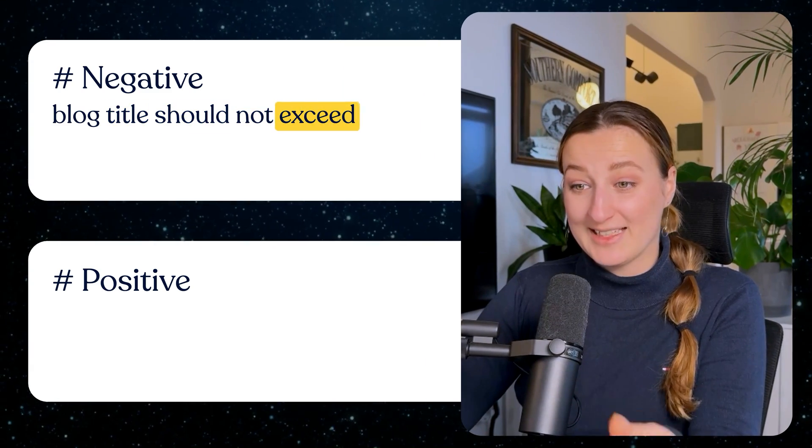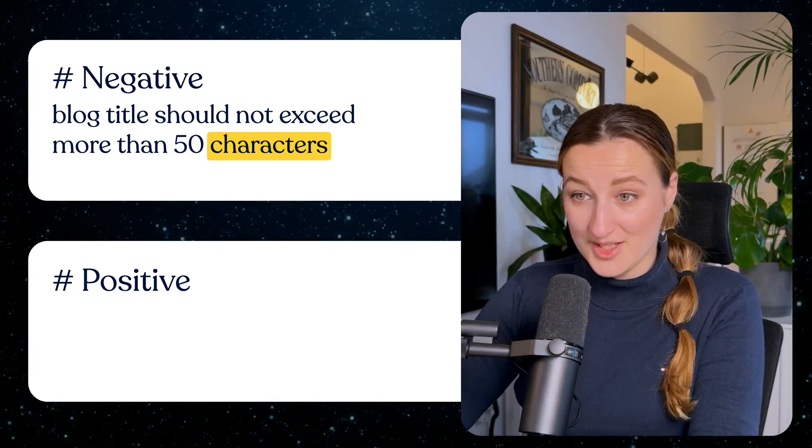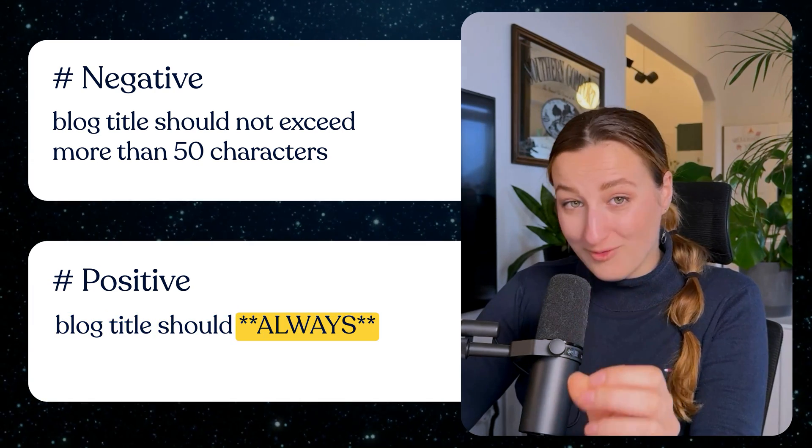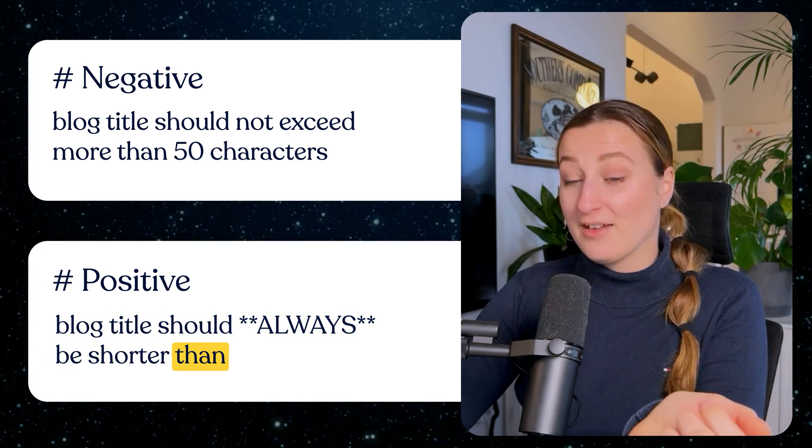Telling an AI model what not to do is not as effective as specifically instructing what to do — use positive, affirmative language instead of negative. Instead of saying 'block title should not exceed more than 50 characters,' try saying 'block title should always be shorter than 50 characters.' Small tweaks like this can dramatically improve your experience with AI.